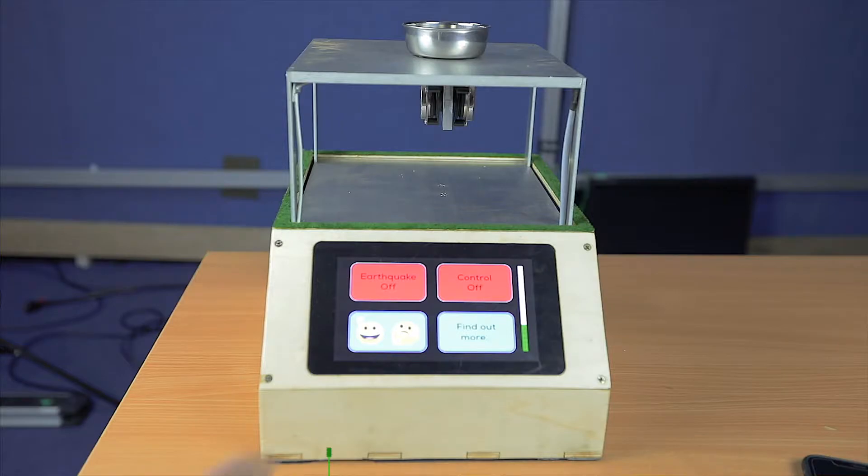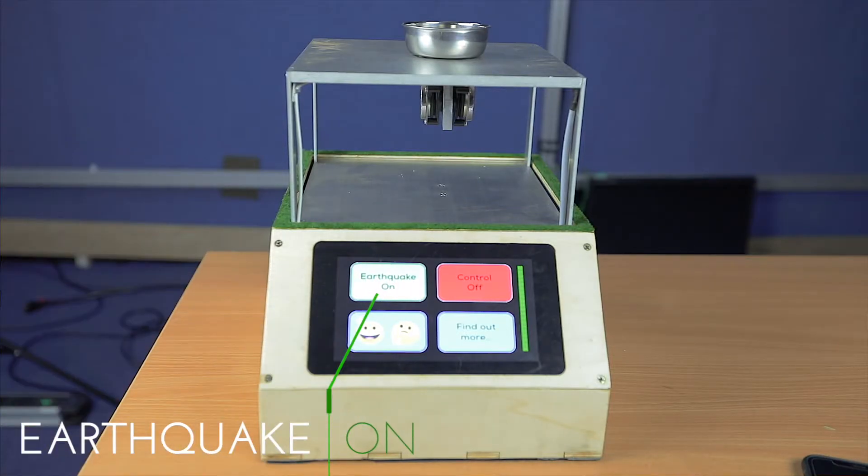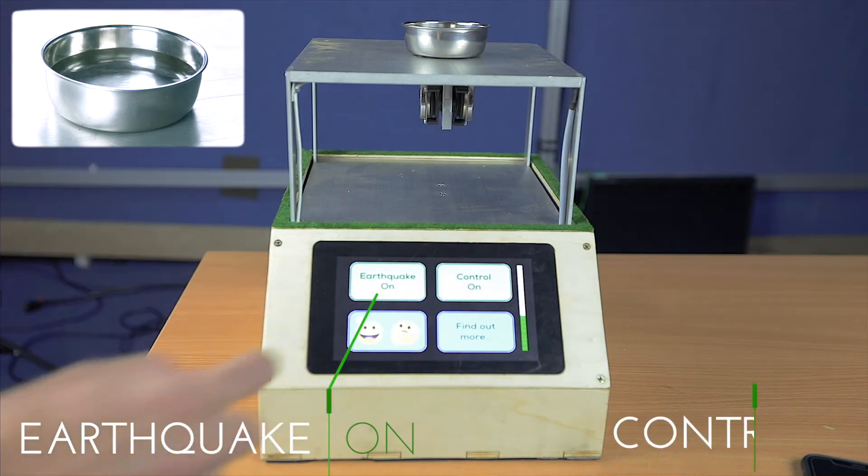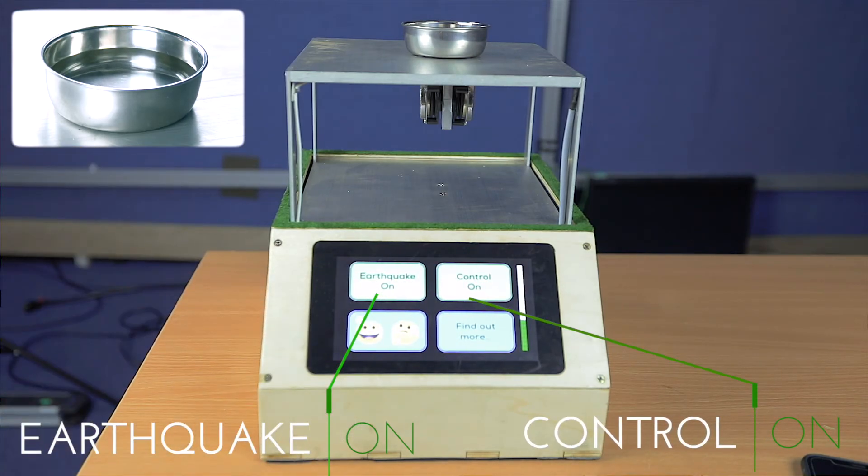When the earthquake is activated, the accelerometer registers the increase in vibration and you can see the ripples in the water. By activating the controller, the vibration level reduces and the ripples disappear.